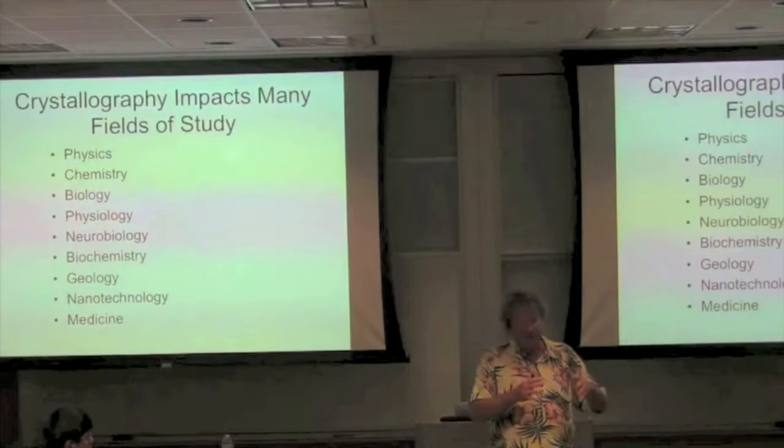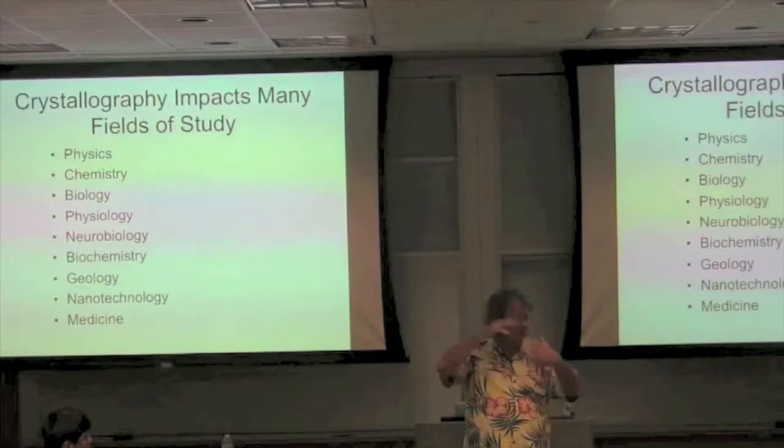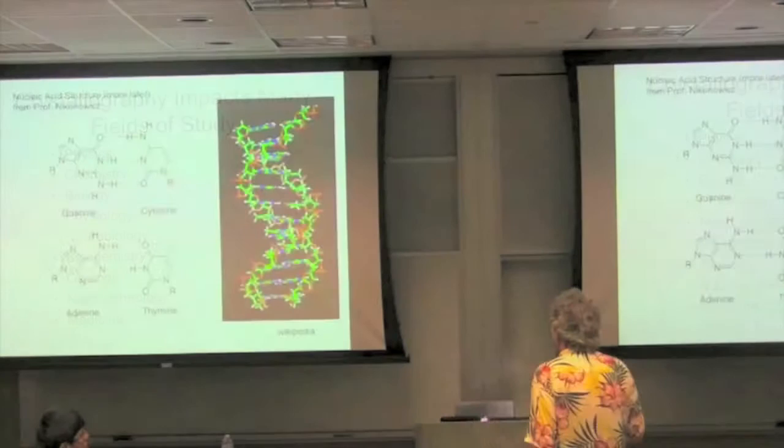Crystallography works by shining X-rays on a crystal. You measure a diffraction pattern. You use math and physics to work backwards to the arrangement of the atoms that gave rise to that diffraction pattern. And so we figured out the atomic structure of DNA.